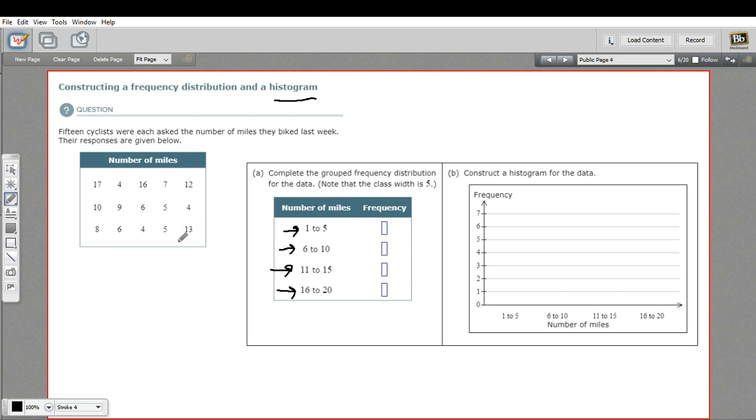And now what we want to do is count the frequency in our data. So how many cyclists biked between one and five miles? Well, let's go ahead and look at that. Here's a four. Here's a four. There's a five. Another five. There's a four. And I think that's it. So let's count those. One, two, three, four, five. So there are five cyclists who biked from one to five miles.